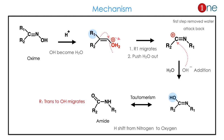Then the mechanism — it is easy. First step: addition of H+, which makes the OH a good leaving group as OH2 (water). Then the R1 group, which is trans to the OH group, migrates as OH2 leaves, forming a cation. The cation is quenched by the removed water: OH minus attacks. You have an alcohol there, and there is a possibility of tautomerism — hydrogen shifts from oxygen to nitrogen. So R1, trans to the leaving group, undergoes migration, and the hydrogen balance is compensated by tautomerism. The mechanism steps are: H+ addition, water removal, OH minus attack, and tautomerism.